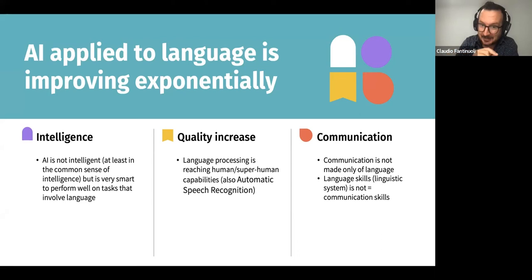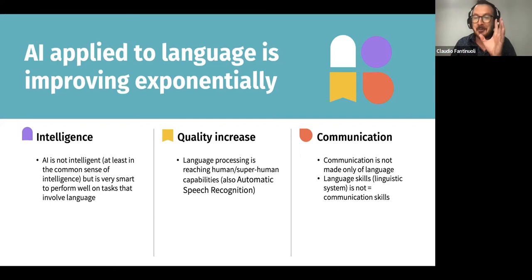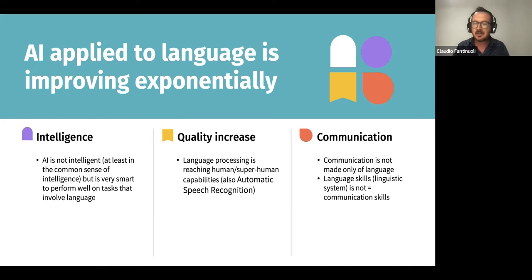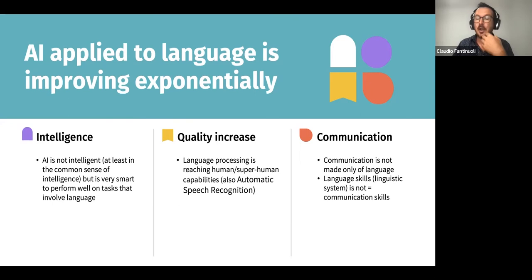When we talk about the ability to manipulate language — including speech recognition — the level of AI is already similar to humans. However, it's very important to keep in mind that this is one thing: the ability to manipulate language. A completely different area is the ability to use AI for communication purposes. There is a gap between the ability to manipulate the linguistic system and the ability to use it for communication purposes. For this, AI is far away from reaching anything similar to human level.